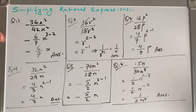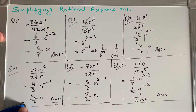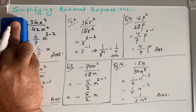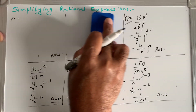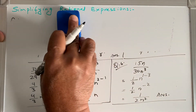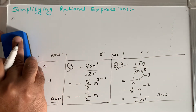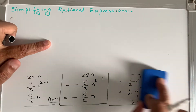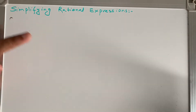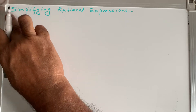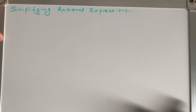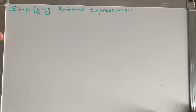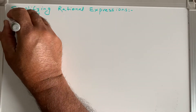We've now completed the simpler questions where we reduce each expression to its simplified form. These are what you'll see in the exam written as 'simplify each rational expression' or 'simplify the following.' Now we move on to Question 7.